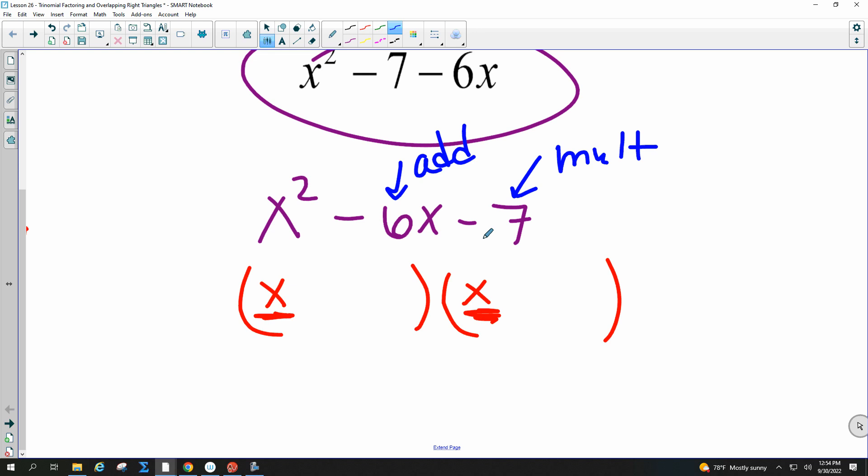There's only one choice for what multiplies to 7. Everybody agree it has to be 1 times 7? That's the only thing that multiplies to be 7. Now, they have to add to a negative number. So in order to add to a negative, I need a negative 7 and a positive 1. Now make sure it does both things. Make sure it adds to negative 6 and multiplies to negative 7. So a positive times a negative multiplies to be a negative.